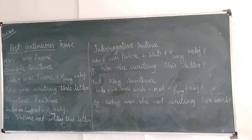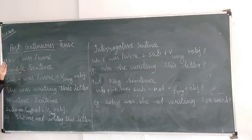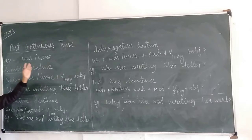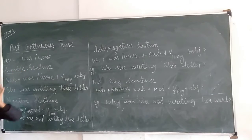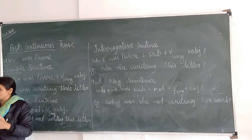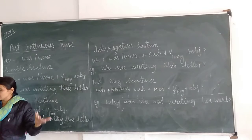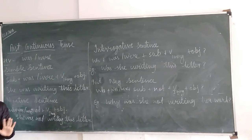Now we will discuss about the past continuous tense. The helping verb of past continuous tense is was and were. Was we will use with he, she, his, name, or third person singular. And were is used with you, we, they, or any other plural number.